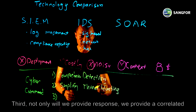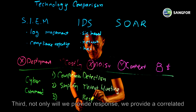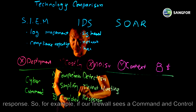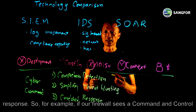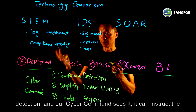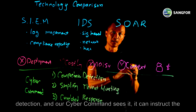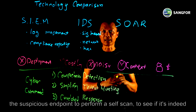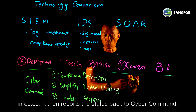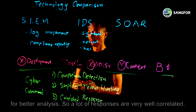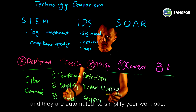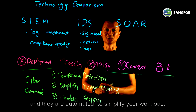The third differentiator is that we don't just provide response — we provide correlated response. For example, if our firewall sees a command-and-control detection, and then Cyber Command sees it too, it can instruct the suspicious endpoint to perform a self-scan to see if it has indeed been infected, and then report the status back to Cyber Command for better analysis. A lot of the responses are very well correlated and automated to simplify your workload.